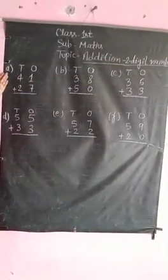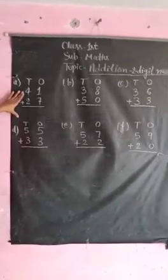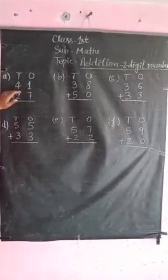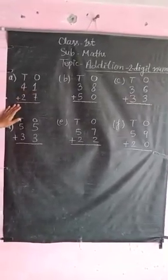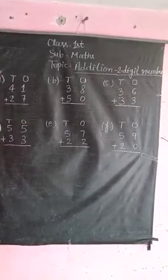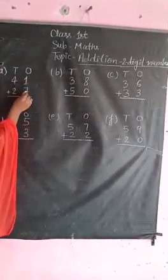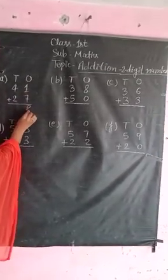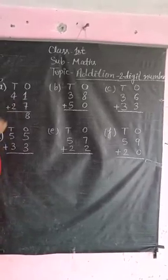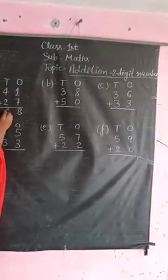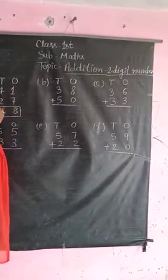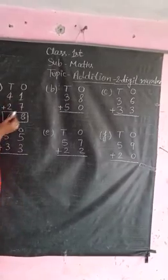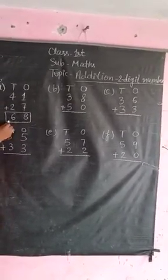Question A. Addition number is 41 plus 27. 41 plus 27. Addition is 1 plus 7 equals 8, 4 plus 2 equals 6. 41 plus 27 equals 68. Total number is 68.